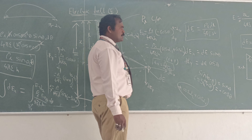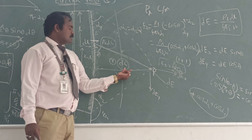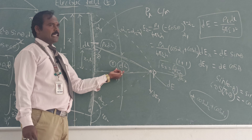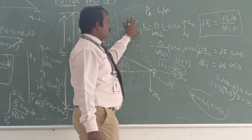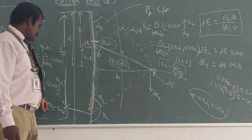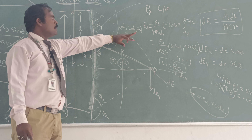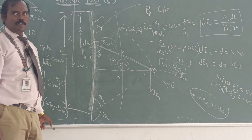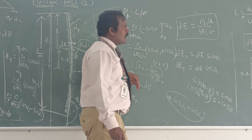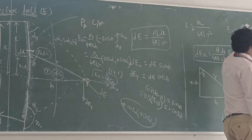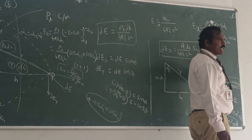Now consider two special cases. Case 1: at the bisector of the line, alpha 1 equals alpha 2 equals alpha. Substituting into Ey gives sin alpha minus sin alpha equals 0, so Ey equals 0. For Ex, cos alpha plus cos alpha equals 2 cos alpha, giving Ex equal to rho L divided by 2 pi epsilon H, times cos alpha.